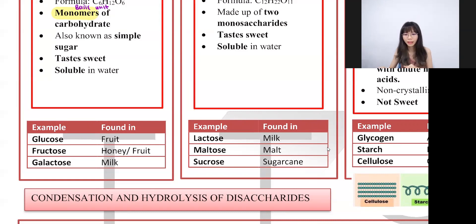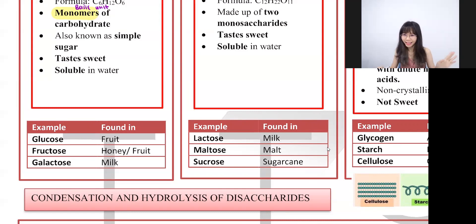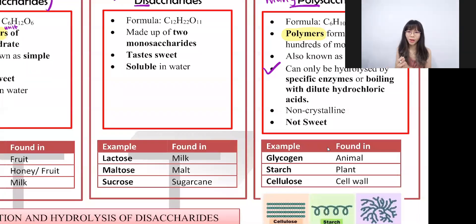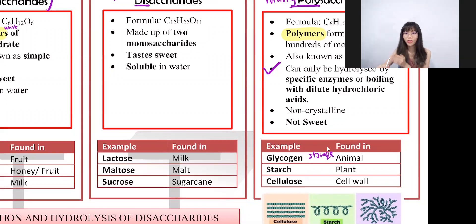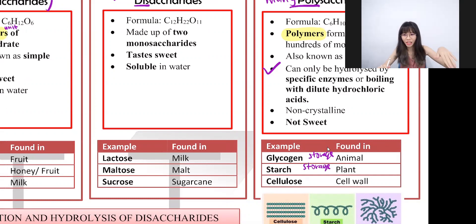Maltose comes from malt, which is from wheat. Sucrose comes from sugar cane — a food with high sugar levels, so you shouldn't drink too much as it can lead to type 2 diabetes. For polysaccharides, we have three examples: glycogen is a storage of glucose found in animal cells; starch is a storage of glucose found in plant cells; and cellulose makes up the plant cell wall.